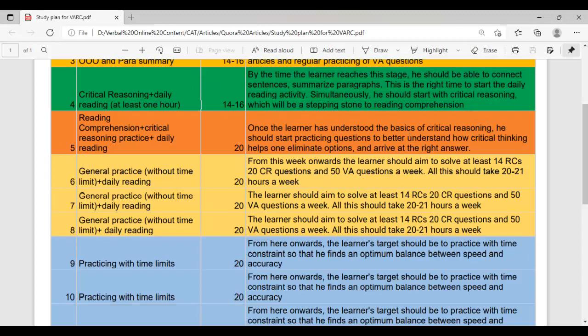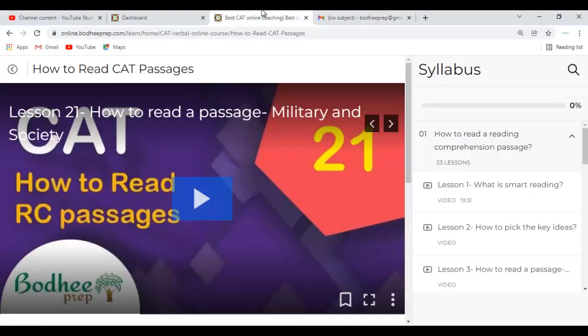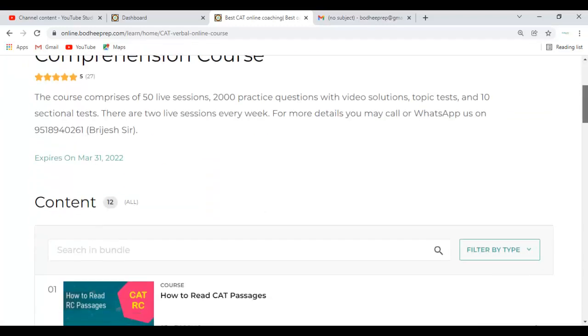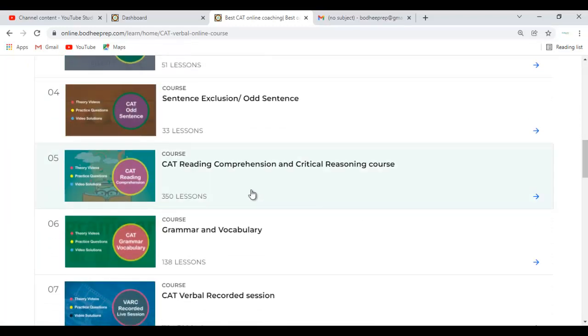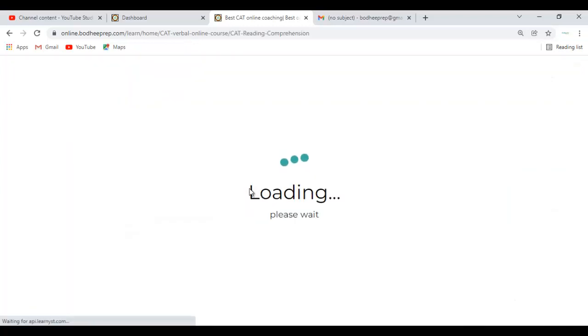Now what to do and how to do from the course. Let's go to the course here. As you see here, this is the course. Now, you'd go to critical reading comprehension, critical reasoning course. So this is the first thing you should do.